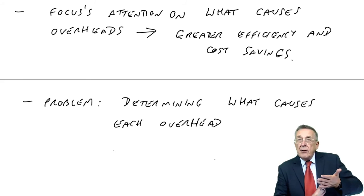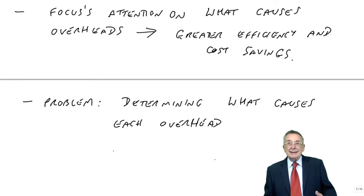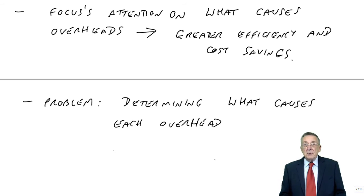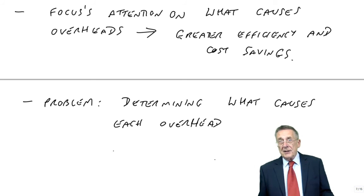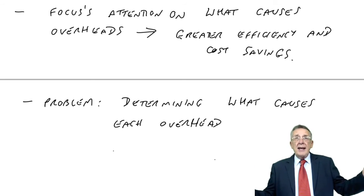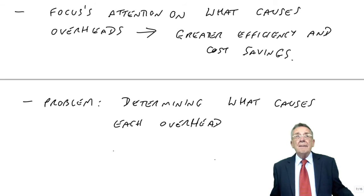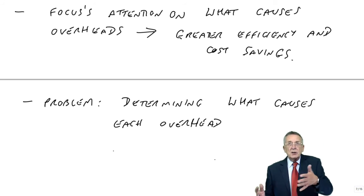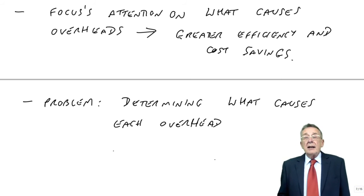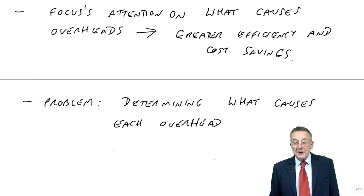But, any remaining overheads, where we just can't find a sensible driver, then those, perhaps, have just been absorbed using traditional absorption costs. So, things like rent of factory, and so on, maybe they'll just do in total cost per labor hour or cost per machine hour. At this point, it's wasting time when there are no things to be found.